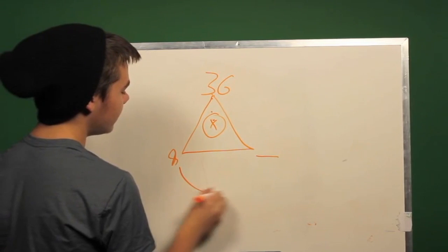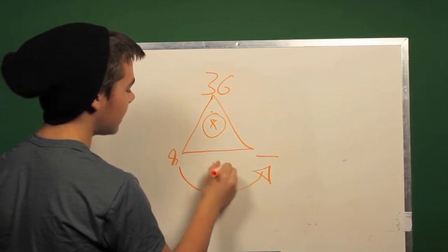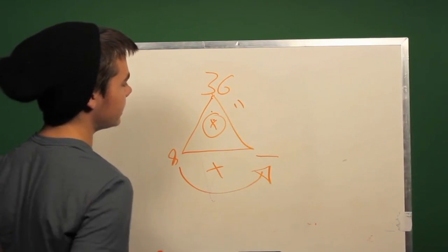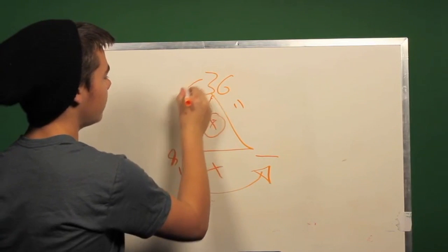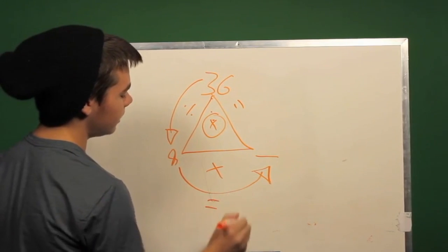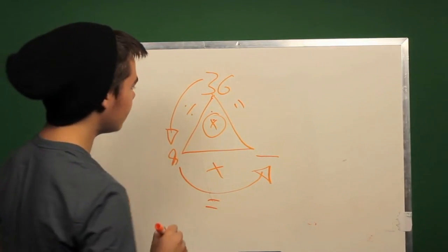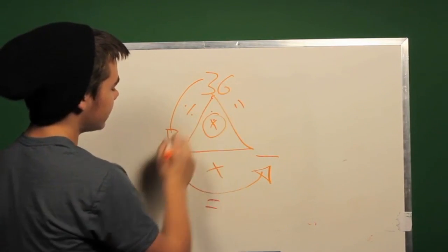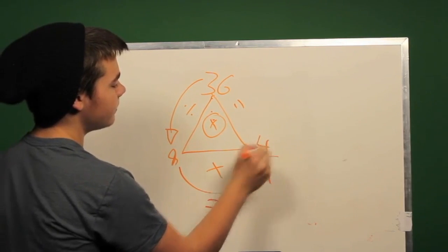we can do 9 times blank to equal 36, or we can do 36 divided by 9 to equal our blank. So with 36 divided by 9, we know that our blank is 4.